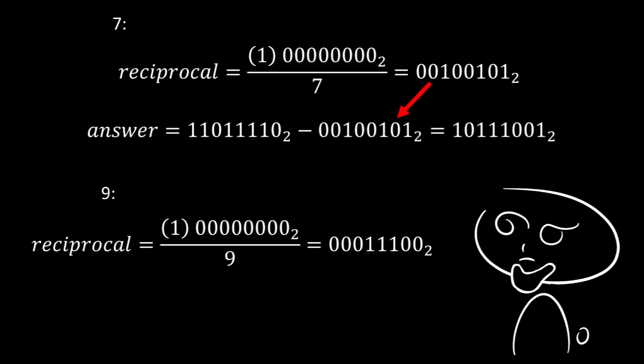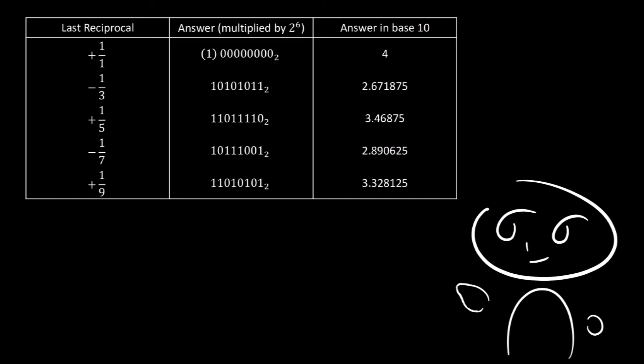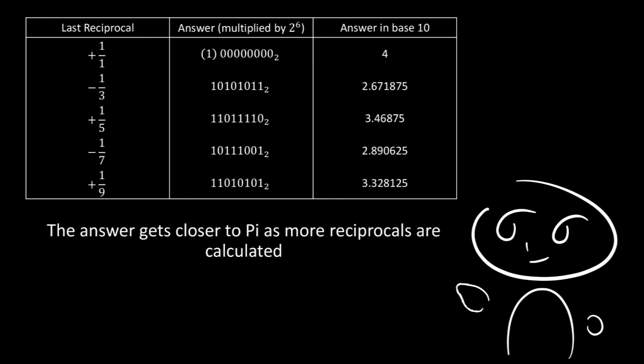Then we have the reciprocal of 9, which we add to the answer. We can create a table where we write down the last reciprocal calculated and the current value of the answer. We can then calculate the answer for pi in base 10 by dividing the fixed point value by 2 to the power of 6 — not 2 to the power of 8 — because the Leibniz formula gives us pi divided by 4, so we multiply by 2 squared to get pi. As we calculate more reciprocals, the answer in base 10 gets closer and closer to pi.